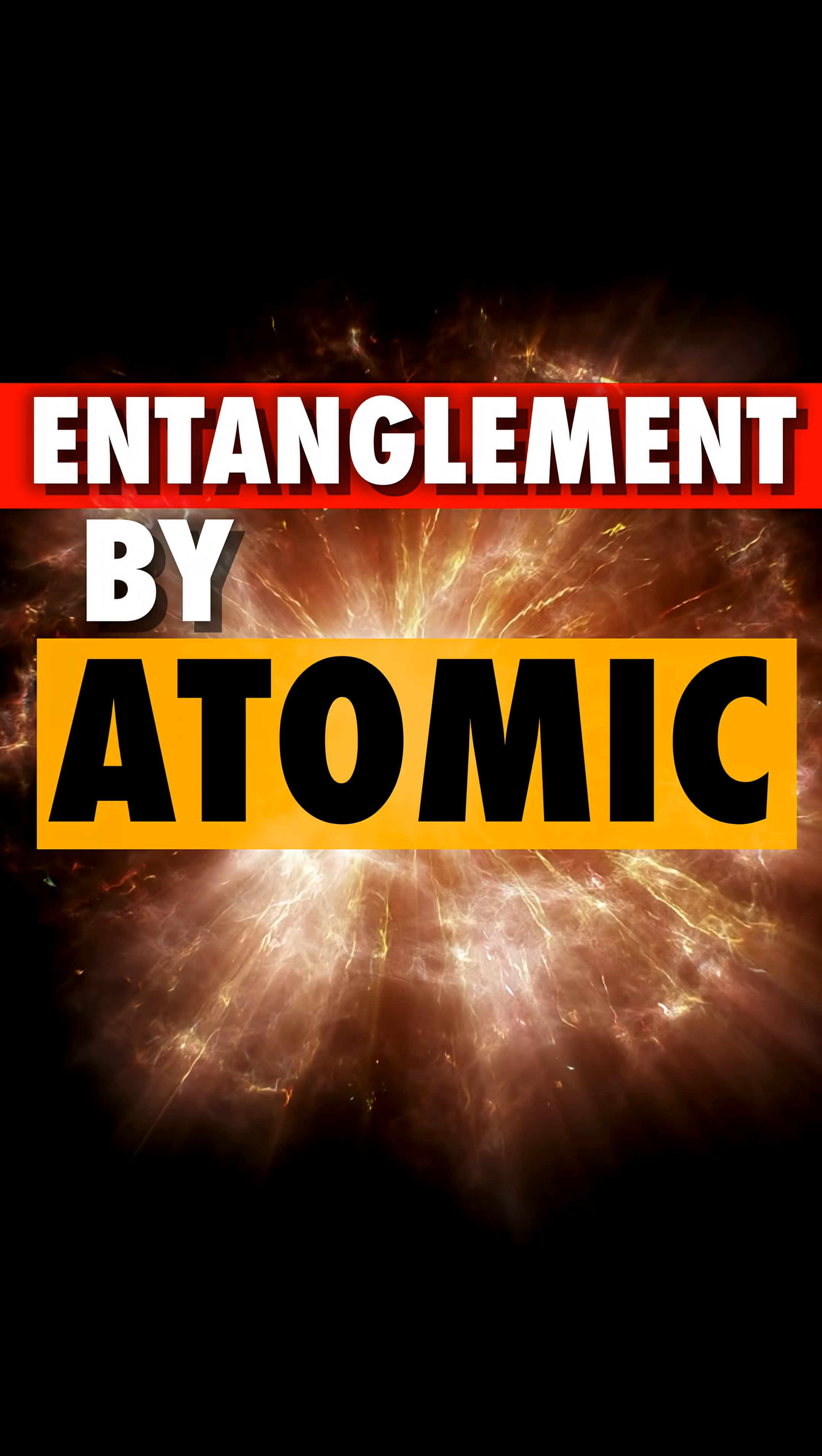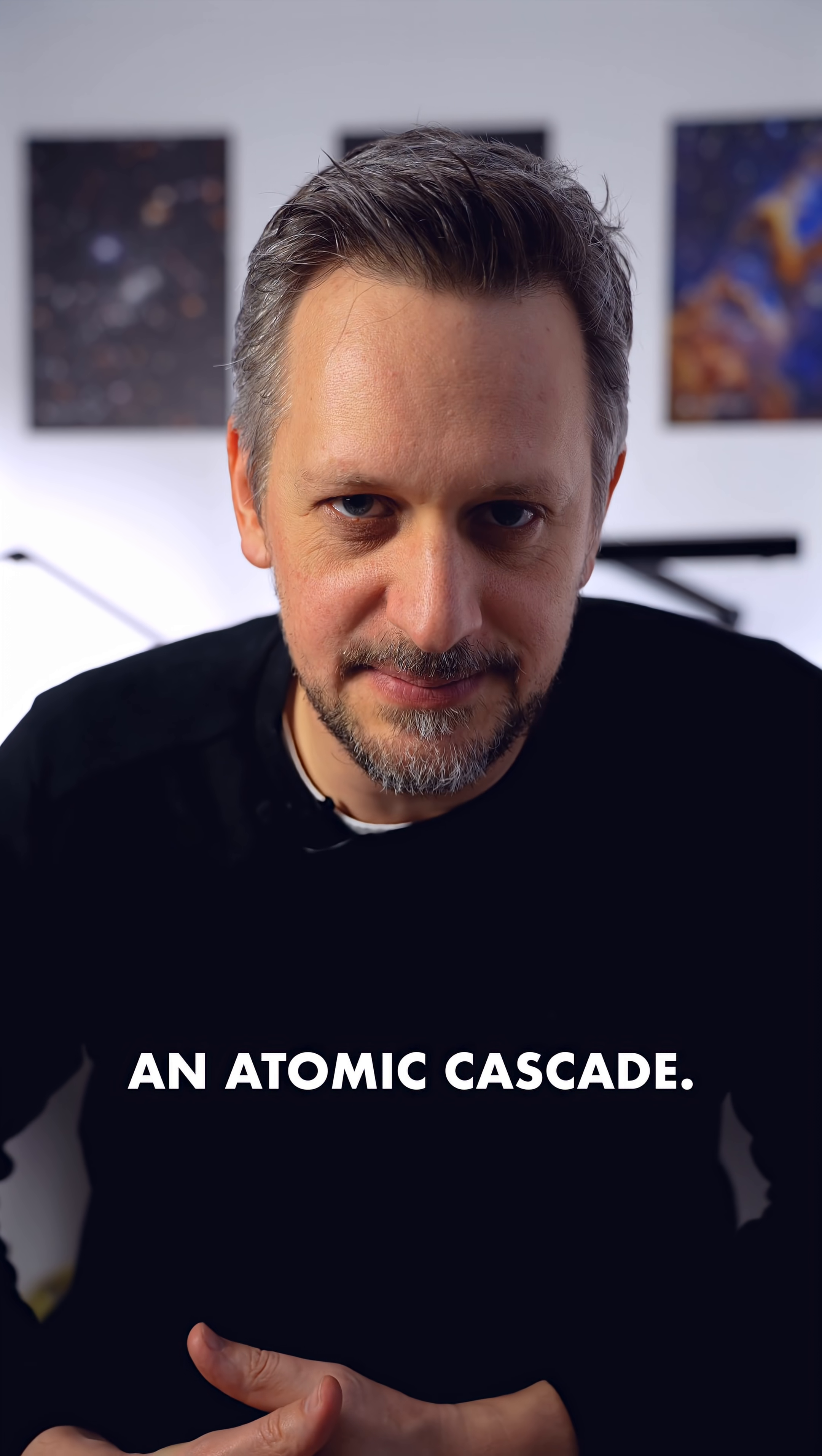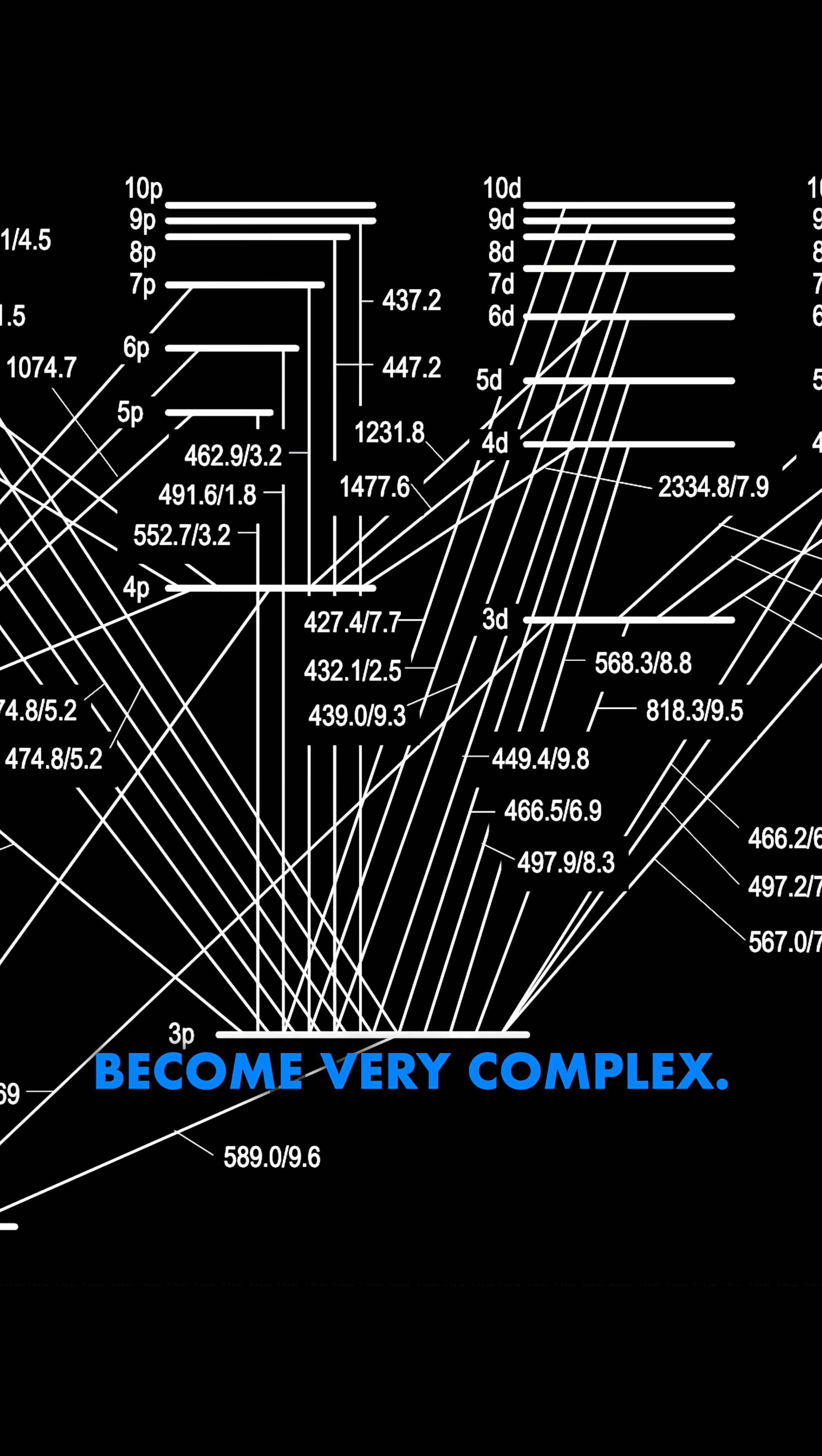Entanglement by atomic cascades. One way to produce it is by using an effect from atomic physics: an atomic cascade. Bound states like atoms cannot have any arbitrary energy. They only have very specific values. An energy scheme of an atom depends on its structure and can become very complex.